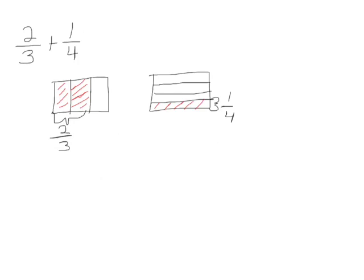Here we're adding two-thirds plus one-fourth. We have a rectangular model divided into three equal parts — two of them are shaded. We have our other model divided into four equal parts — one of them is shaded. We have two-thirds and we have one-fourth. We'll divide our first rectangle into fourths so that we're getting a common unit, and now our unit is twelfths — there are twelve equal parts. We'll divide our other rectangle into thirds, and again now we have twelfths.